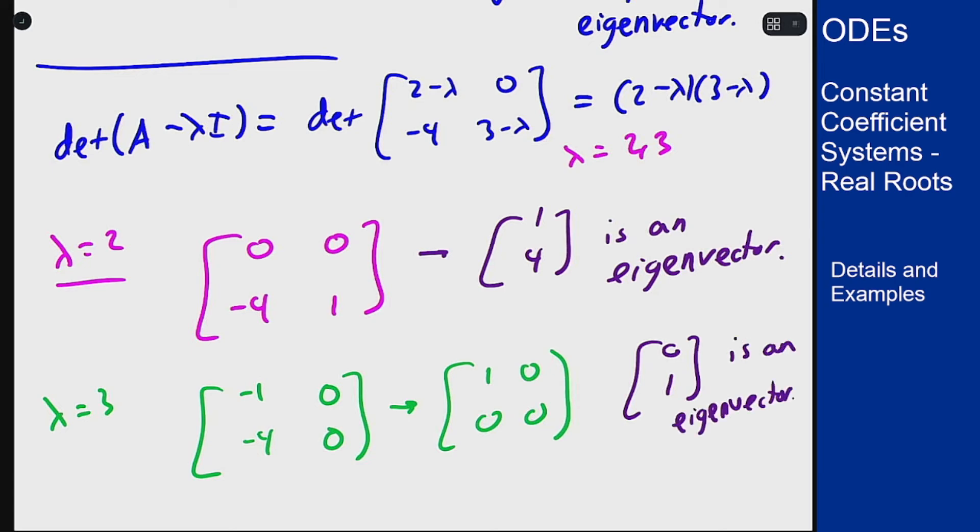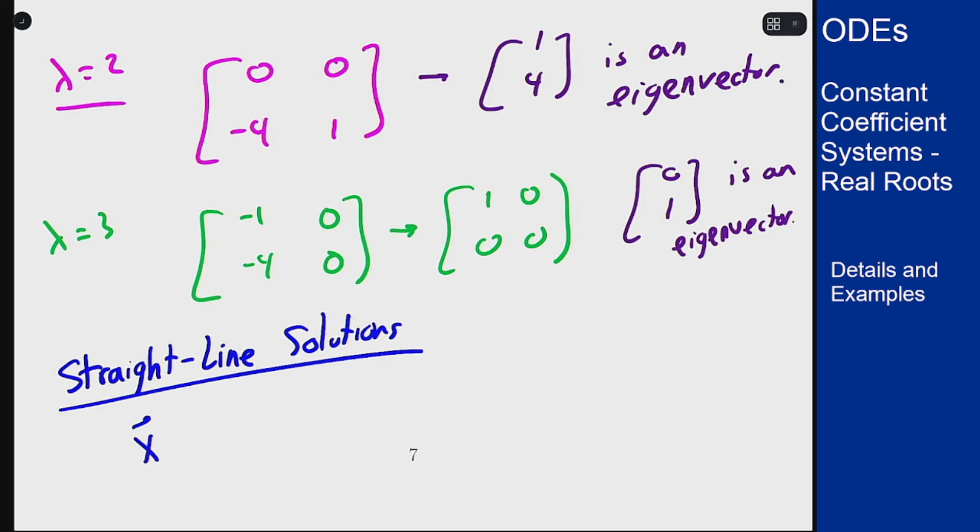Thus we can write out our two straight-line solutions as x1 of t is 1, 4 for the eigenvector with eigenvalue 2, e to the 2t, and x2 of t is 0, 1, e to the 3t.